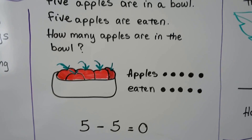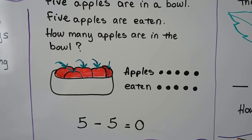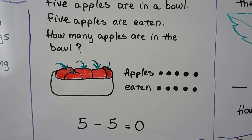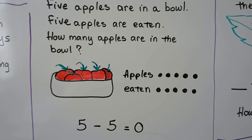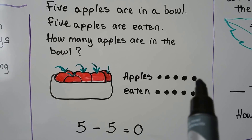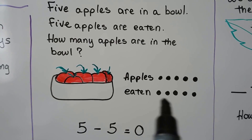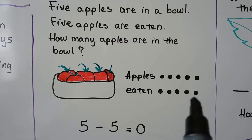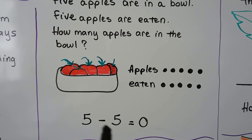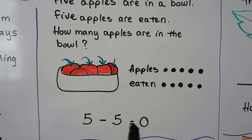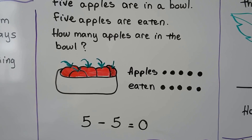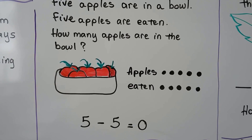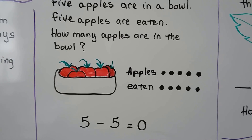Five apples are in a bowl. Five apples are eaten. How many apples are in the bowl? Five dots for five apples, five dots for five eaten. Five minus five is equal to zero. All five apples were eaten from the bowl — there aren't any left.